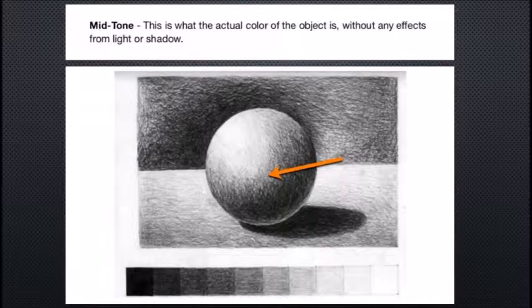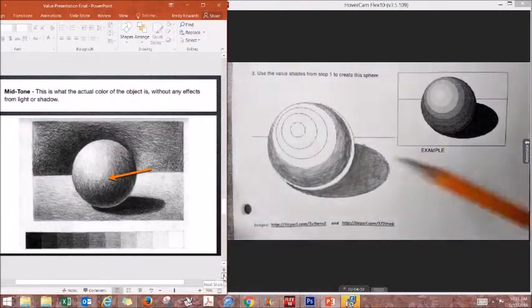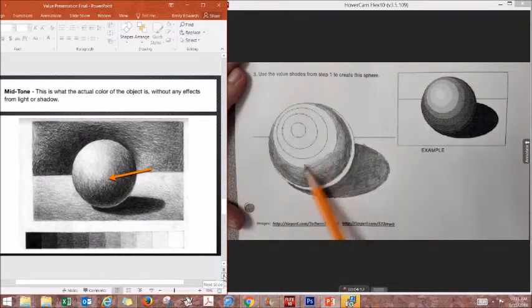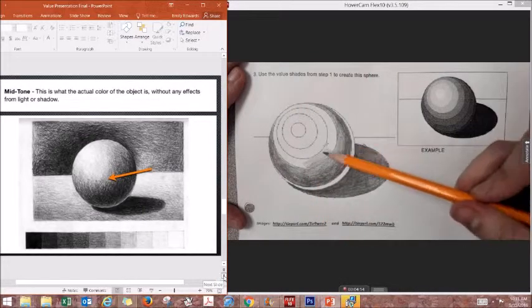The middle of my sphere is going to be addressed with a mid-tone. This is the actual color of the object where the lighting has not changed it in either a highlight or a shadow. When I start mapping this in, I am going to have a nice medium value.